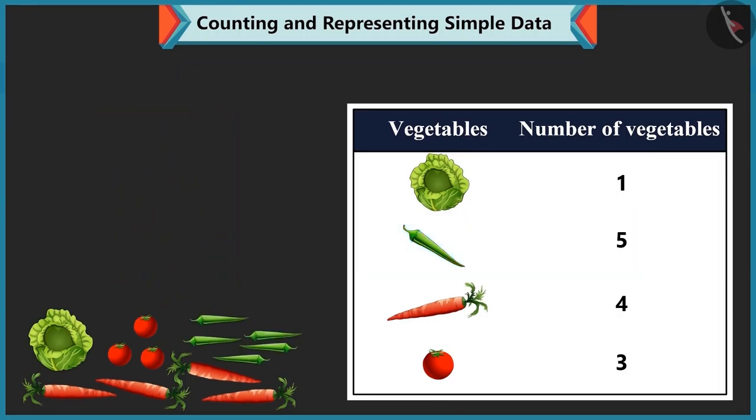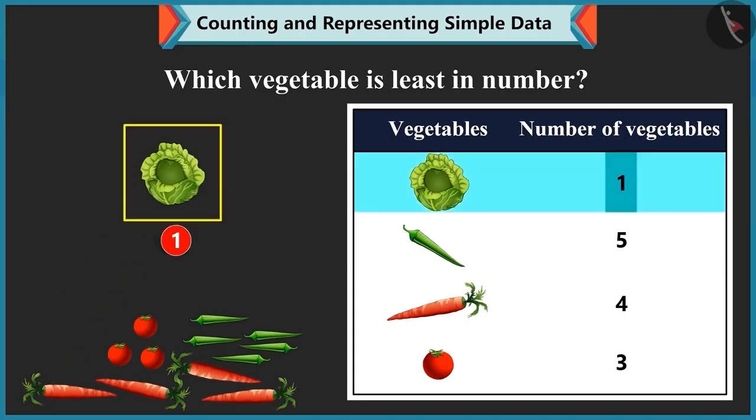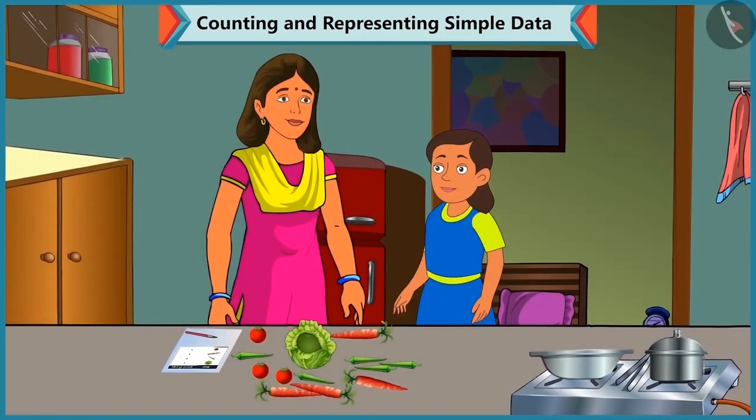You are right, Bubbly. Now tell me. Which vegetable is least in number with us? There is 1 cabbage. So, it is least in number.